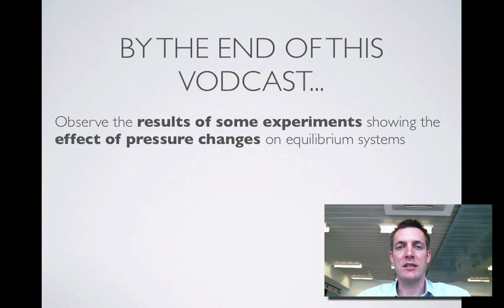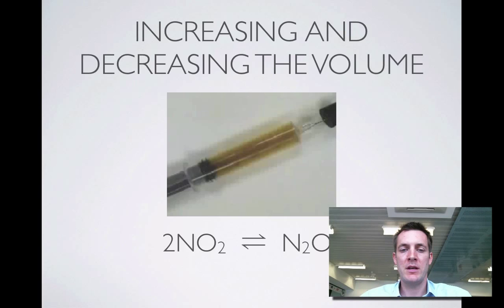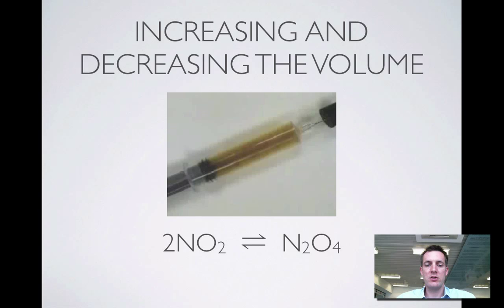an experiment demonstrating how a system at equilibrium responds when the pressure is changed. Let's introduce the system. This equilibrium is between the brown gas nitrogen dioxide (NO2) on the left and the colorless gas dinitrogen tetroxide (N2O4) on the right.